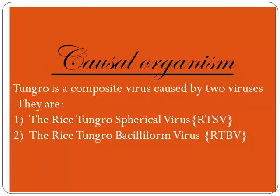Let us see the causal organism of this disease. Tungro is a composite virus caused by two viruses. One is the Rice Tungro Spherical Virus, RTSP. Another one is the Rice Tungro Bacilliform Virus, RTBV.